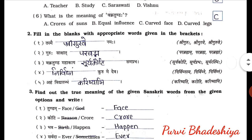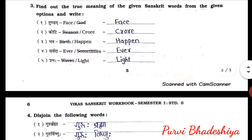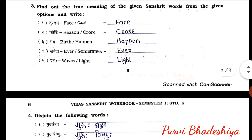Now exercise number three: find out the true meaning of the given Sanskrit words from the given options and write. First one: Tundam — face or God? The correct answer is face. Second one: Koti — reason or Karor? The correct answer is Crore. Third one: Bhava — birth or happen? The correct answer is happen.